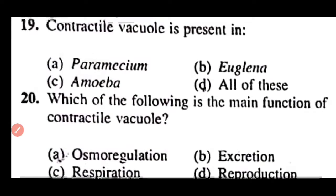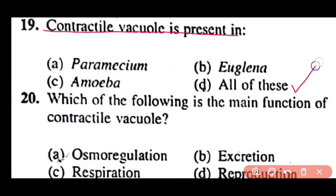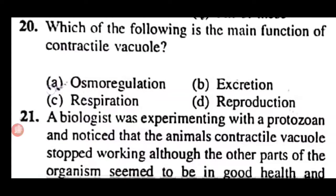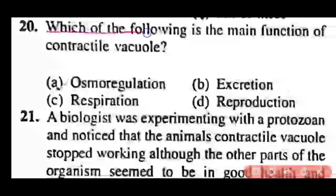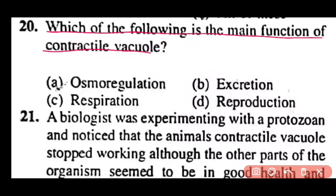Question 19: Contractile vacuole is present in Paramecium, Euglena, Amoeba, or all of these? Correct answer is option D. All of these have contractile vacuoles. Question 20: What is the main function of the contractile vacuole — osmoregulation, excretion, respiration, or reproduction? Correct answer is option A. Osmoregulation is the main function of the contractile vacuole.